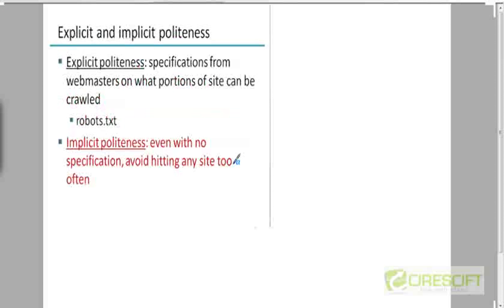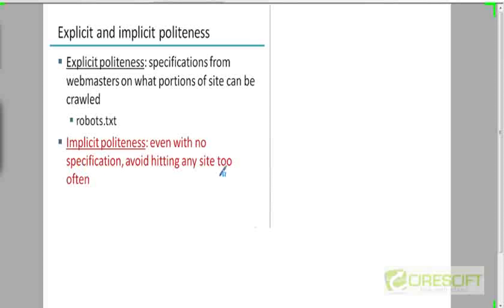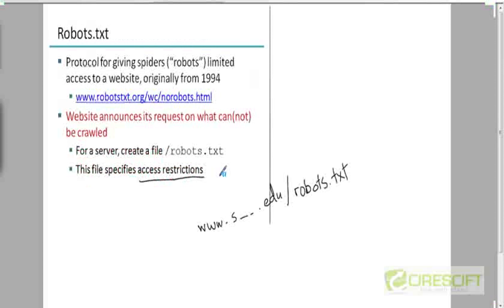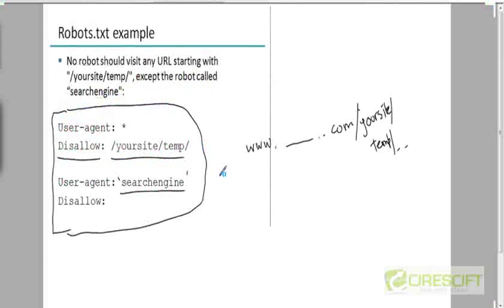Explicit politeness refers to specifications from webmasters on what portion of the site can be crawled. Implicit politeness means that even without any robots.txt file, a crawler should avoid hitting any site too often. We just saw that illustrated in the architecture.